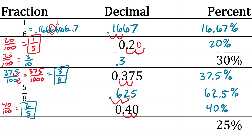Last row: starting with 25%. To turn it into a fraction, write 25 over 100. Both are divisible by 25, giving us one-fourth. To get the decimal, put 1 ÷ 4 in your calculator, and it gives you 0.25. That's all there is to converting between these three forms.